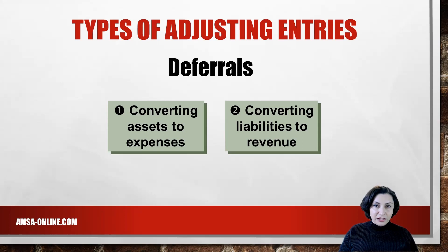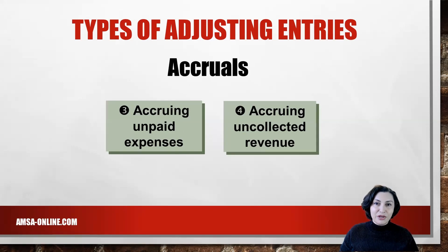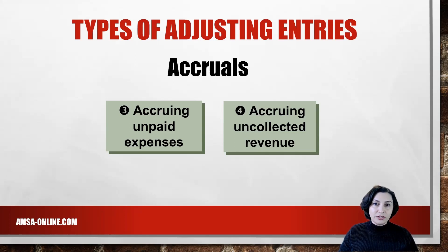The first category is when payments are made or cash is received before the expense or revenue is recognized. This includes prepaid or deferred expenses, including depreciation, and unearned or deferred revenues. The second major category is when cash is paid or received after the expense or revenue is recognized. These are very common adjustments and include accrued expenses and accrued revenues. We will be covering accruals in a separate video — the link is posted here and in the description box.